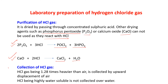Collection of HCl gas: HCl gas, being 1.28 times heavier than air, is collected by upward displacement of air. It is not collected by downward displacement of air because it is heavier than air. HCl being highly water-soluble, it is not collected over water.